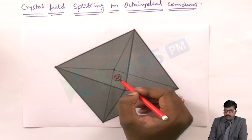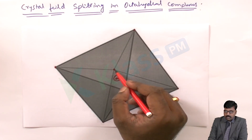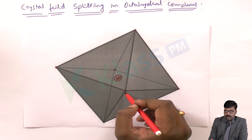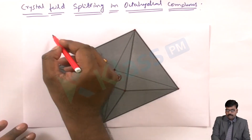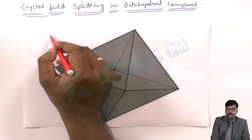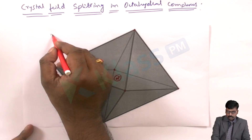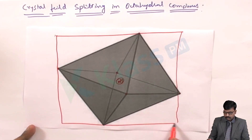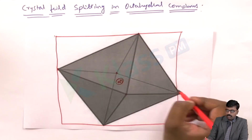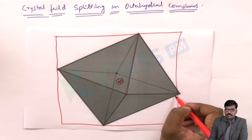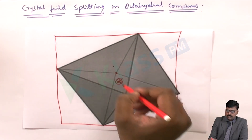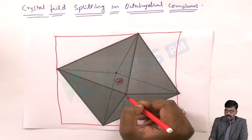If you consider a cube, the ligands in an octahedral complex will approach through the axes, not through the corners of the cube. These ligands approach through the axis, and two will go through the downside and upside axis of the cube.